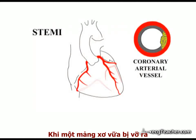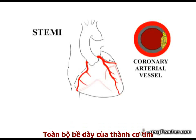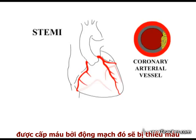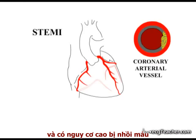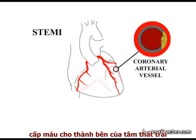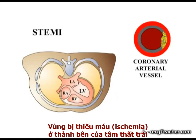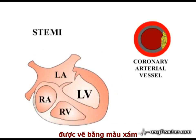When an atheromatous plaque ruptures in a coronary vessel and the clot which forms completely obliterates the vascular lumen, the entire thickness of the myocardial wall supplied by that vessel becomes ischemic and is at risk of infarction. In the example shown here, the patient has developed a complete occlusion of the artery which supplies the lateral wall of the left ventricle. In this horizontal section, the ischemic area in the lateral wall of the left ventricle is shown in grey.